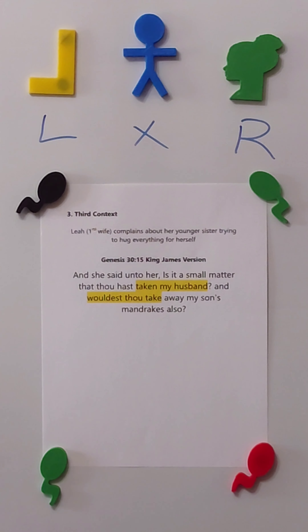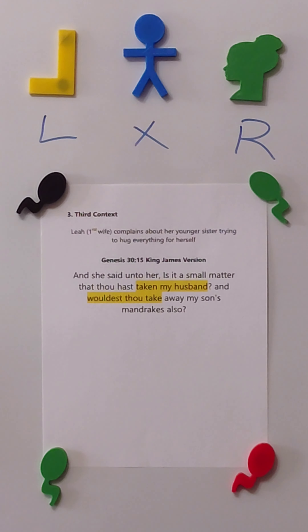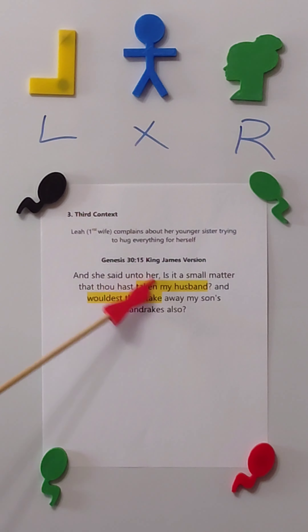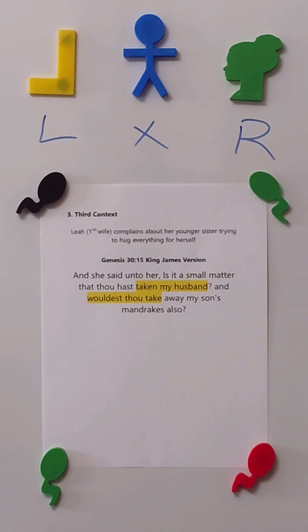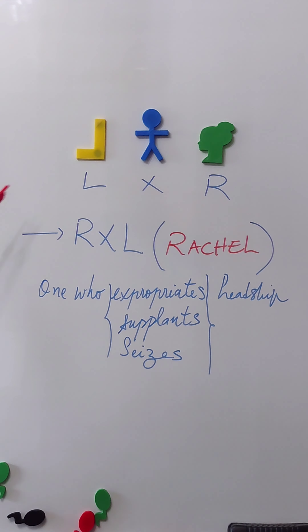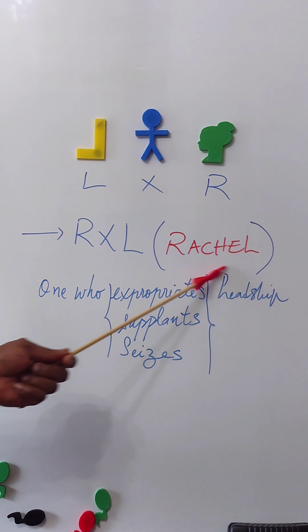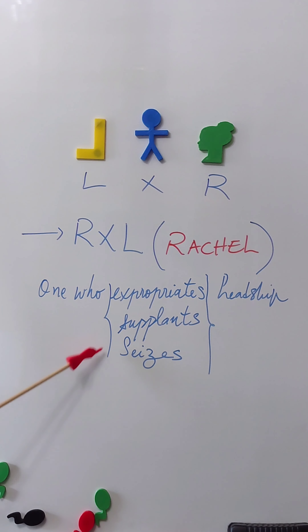In a third context, Genesis 30 verse 15 in the King James Version, Leah complains about her younger sister Rachel trying to hog everything for herself. Leah said: 'Is it a small matter that thou hast taken my husband, and wouldest take away my son's mandrakes also?' Wherefore she is called Rachel, meaning one who expropriates, or who supplants, or who seizes the headship. That's it about Rachel — coming next we are going to talk about Leah, so stay tuned.